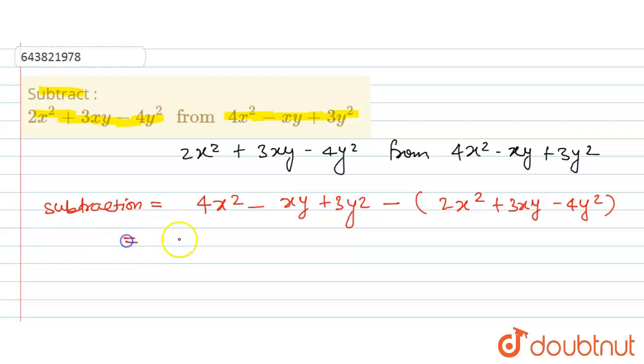This can be written as 4x² - xy + 3y² minus, multiplying with each term. So minus 2x², minus 3xy, and minus negative 4y² which becomes plus 4y².